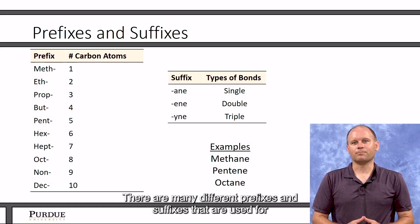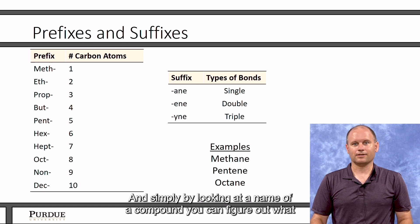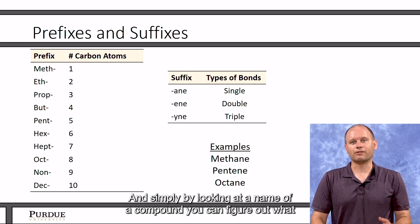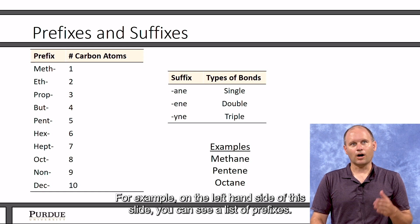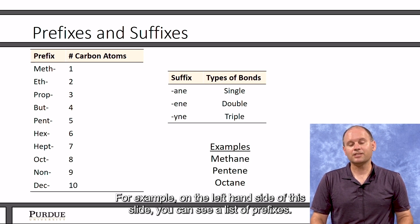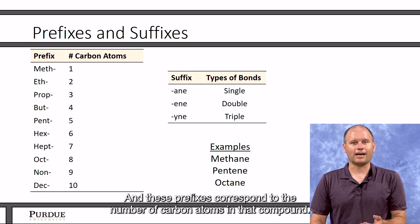There are many different prefixes and suffixes that are used for organic compounds. And simply by looking at a name of a compound, you can figure out what the chemical structure is. For example, on the left hand side of this slide, you can see a list of prefixes, and these prefixes correspond to the number of carbon atoms in that compound.